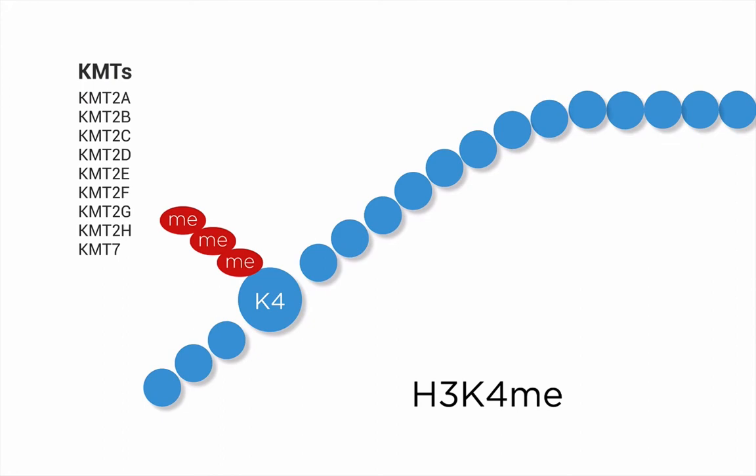Depending on the interactions with other proteins, the KMTs can add one, two, or three methyl groups to the histone residue. The methylation can be removed by lysine-specific demethylases, so-called KDMs.